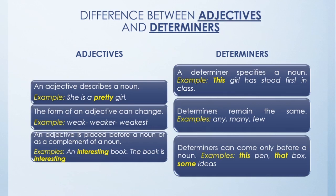The form of an adjective can change: weak, weaker, weakest. For example: 'He is a weak boy. He is weaker than his brother. He is the weakest among the siblings.' The form of the adjective weak has changed. But determiners remain the same.